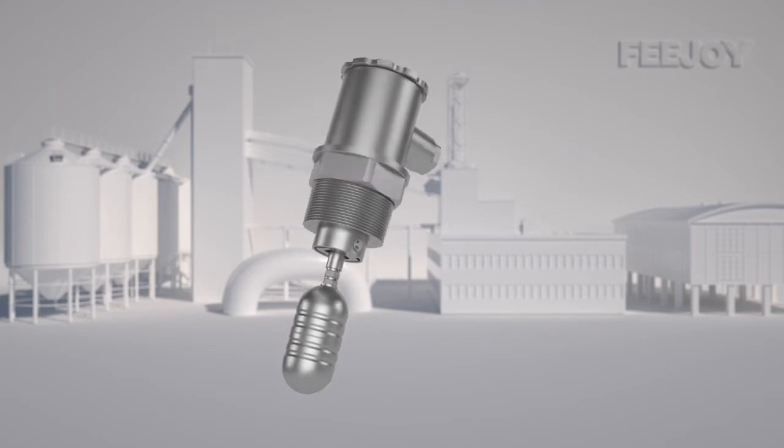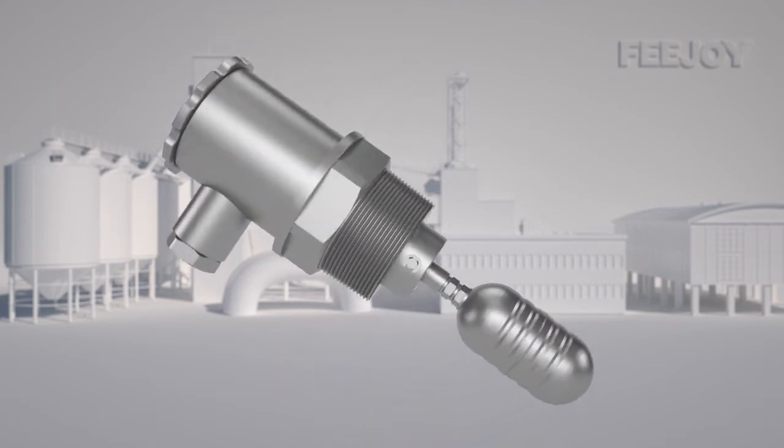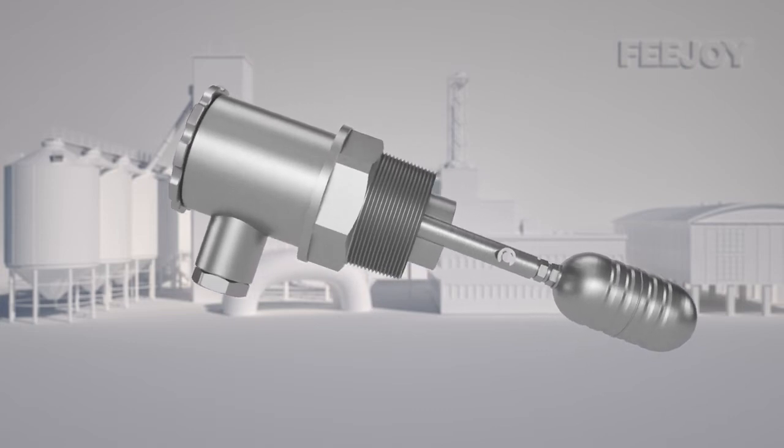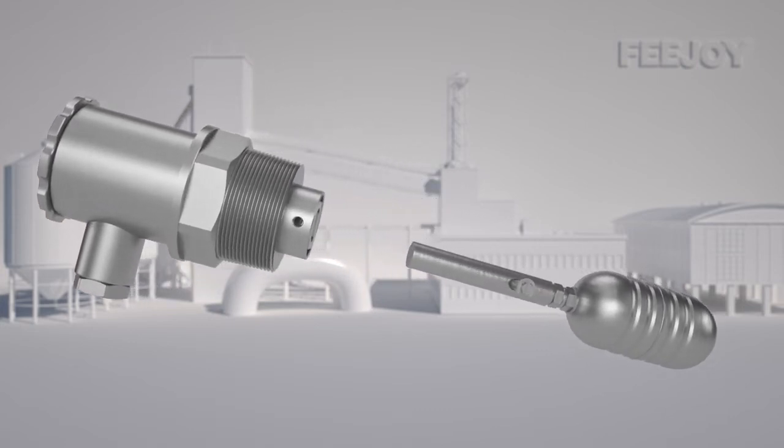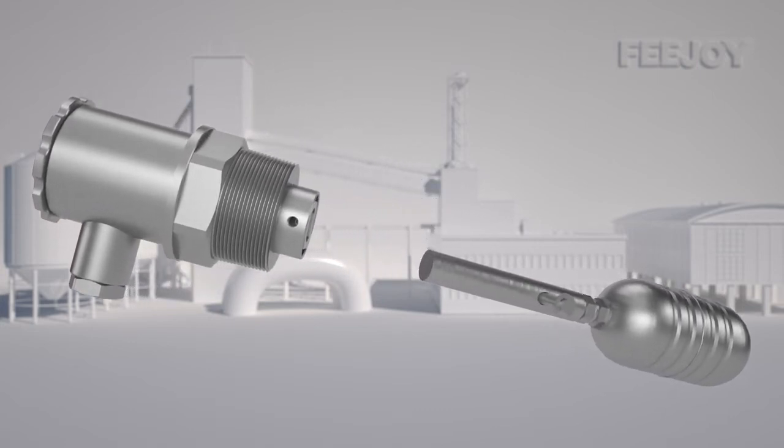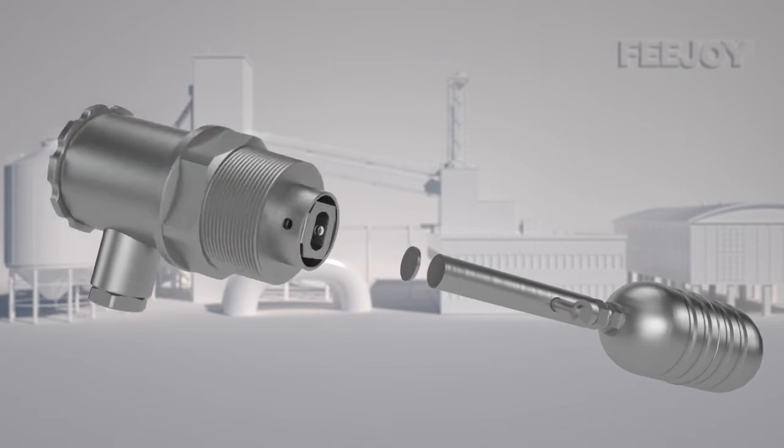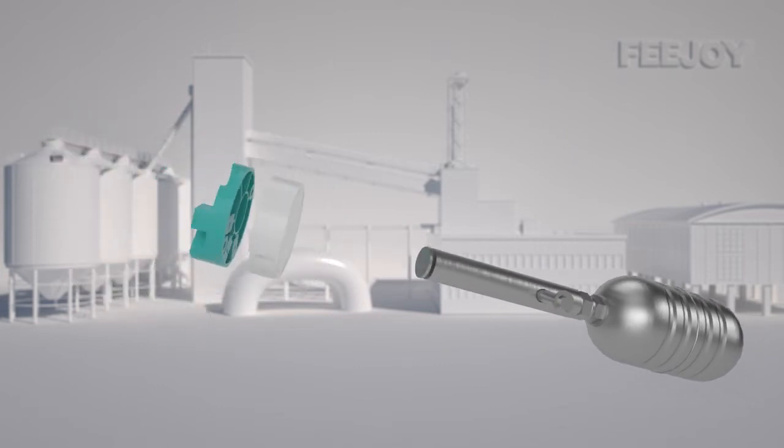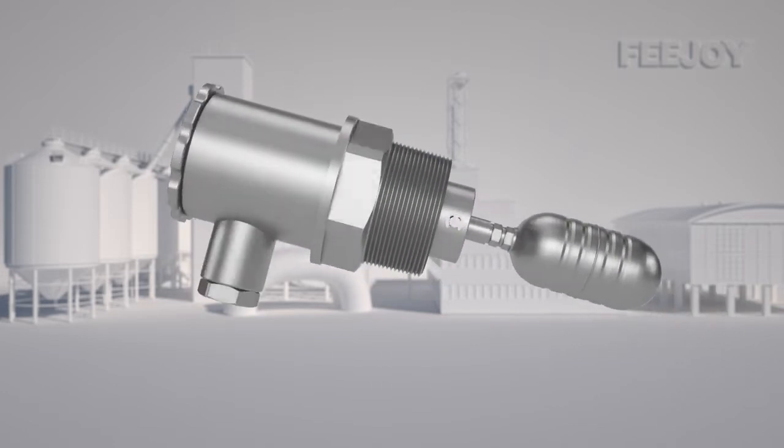The side-mounted float level switch uses buoyancy to control the liquid level. It is usually divided into two parts, a junction box and a float. A permanent magnet is installed on the arm end of the floating ball link, and a corresponding switch device is provided in the junction box.